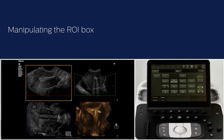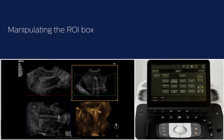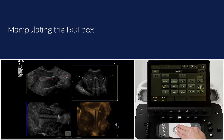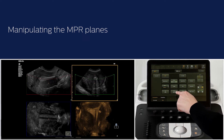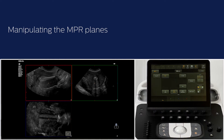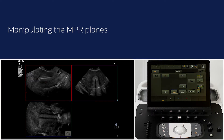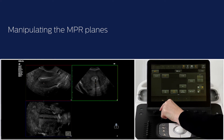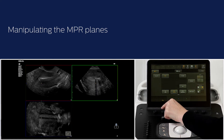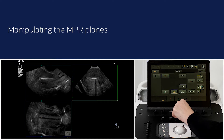For example, if I want to change the ROI size on the transverse plane, I will select the transverse plane number 2 on the touch screen. Use the buttons next to the trackball, select 3D ROI Size and move the trackball up and down or left and right to change the box size. Let's take a look at how we can manipulate the MPR plane. You can slice through a specific plane by selecting the plane on the touch screen and turning the slice knob, or turn the X, Y and Z knobs to rotate a specific plane.